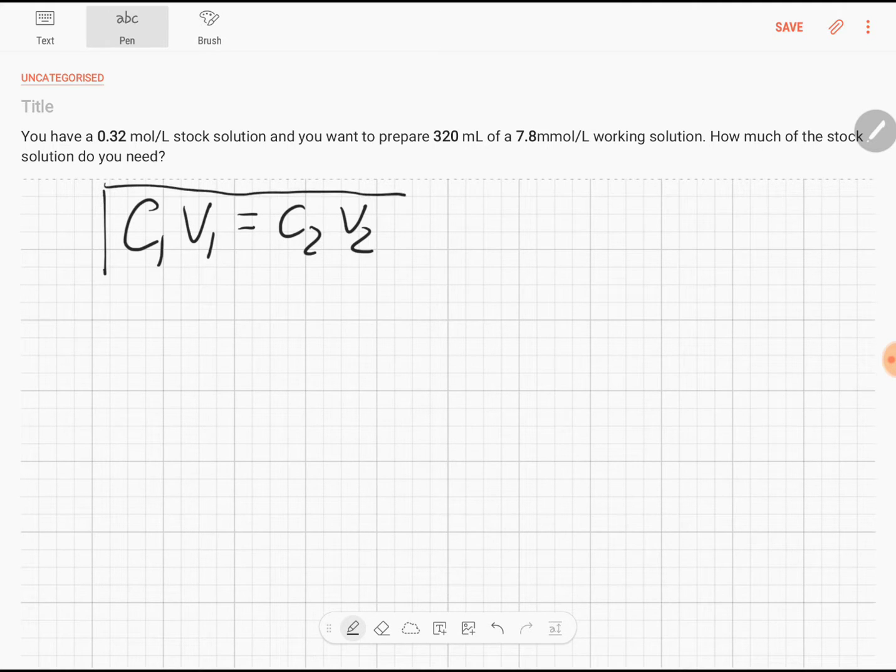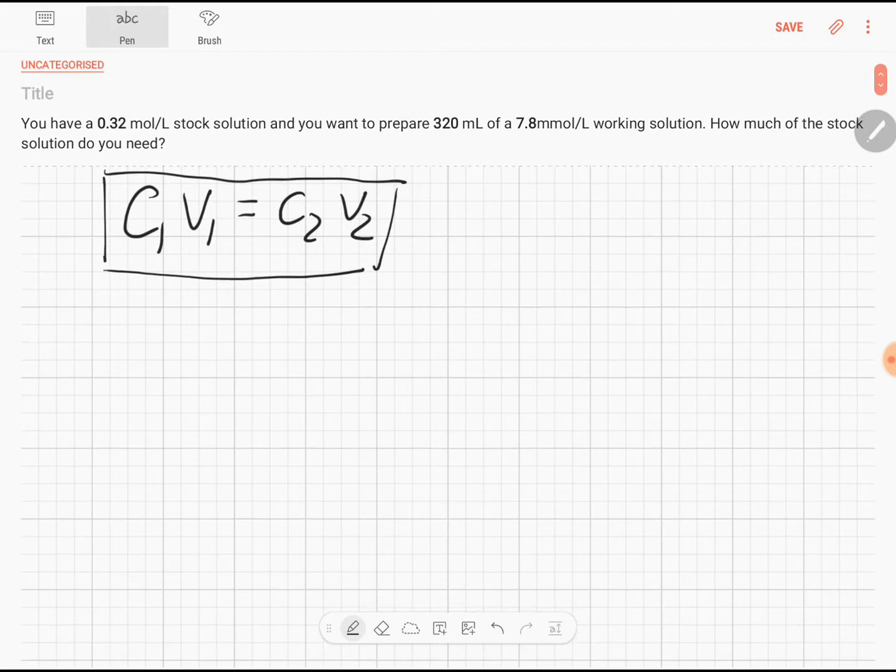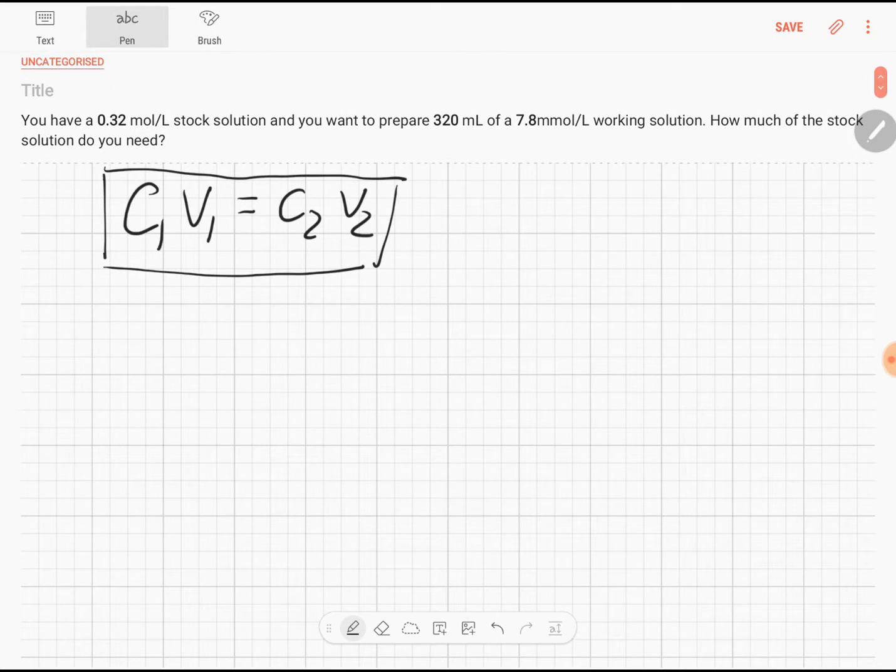That is the equation we are going to use for this particular problem and here is a typical question. It says you have a 0.32 mole per liter stock solution and you want to prepare 320 milliliter of 7.8 millimolar working solution. How much of this stock solution do we need?